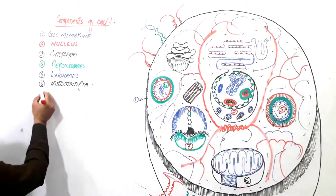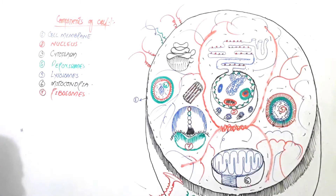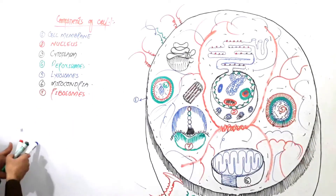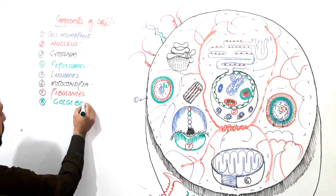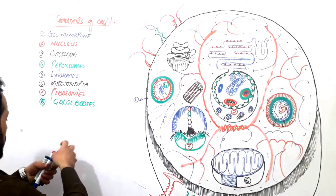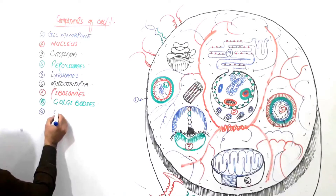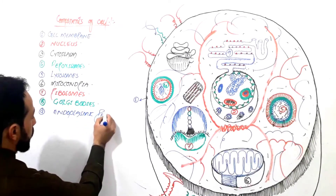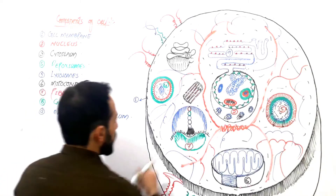The seventh part of the cell is the ribosome, and we will discuss ribosomes in detail. The eighth part is the Golgi bodies, also called the Golgi apparatus — we will discuss it in detail. The ninth part is the endoplasmic reticulum, and I will discuss its structure, functions, and all its types in detail.